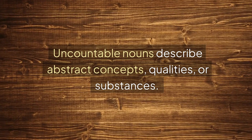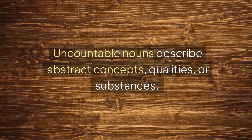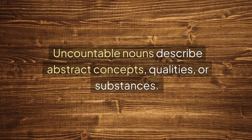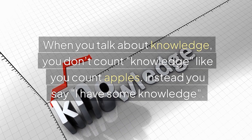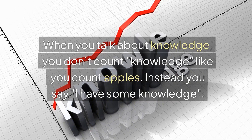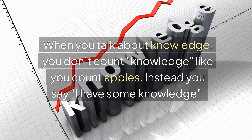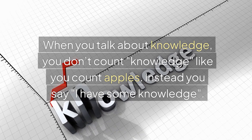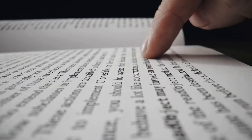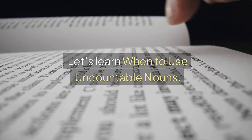Uncountable nouns describe abstract concepts, qualities, or substances. When you talk about knowledge, you don't count knowledge like you count apples. Instead, you say, 'I have some knowledge.' Let's learn when to use uncountable nouns.